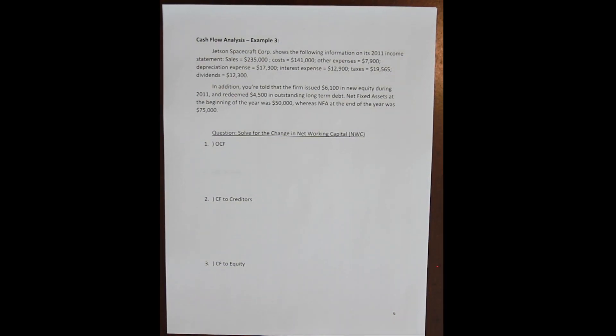Now let's work on an example where we put a little more financial context on the problem. We're going to set up a company and use our cash flow from assets identity — our free cash flow identity — to try and get a more holistic picture of how the firm is operating. Our firm is Jetson Spacecraft Corporation, showing the following information on their 2011 income statement.